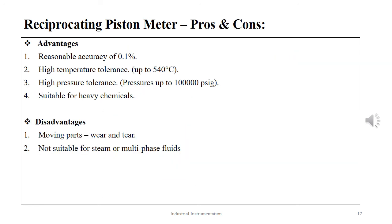The advantages of the reciprocating piston flow meter are: reasonable accuracy of 0.1%, very high temperature tolerance 540 degrees Celsius, very high pressure tolerance 100,000 PSIG, and suitability for heavy chemicals. The limitations are moving parts and therefore chances of wear and tear are high, and not suitable for steam or multiphase fluids.